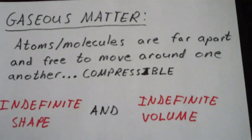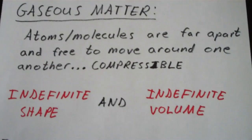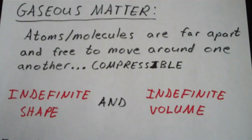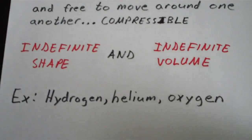Gases have an indefinite shape and an indefinite volume. That means that whatever container you put a gas in, it'll take the shape and the volume of that container. Examples of gases are helium, hydrogen, and oxygen, and a great many others.